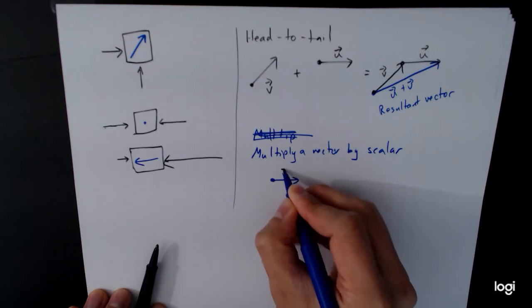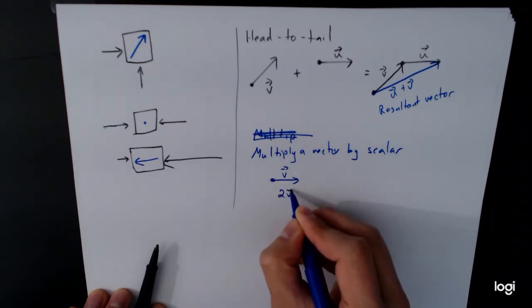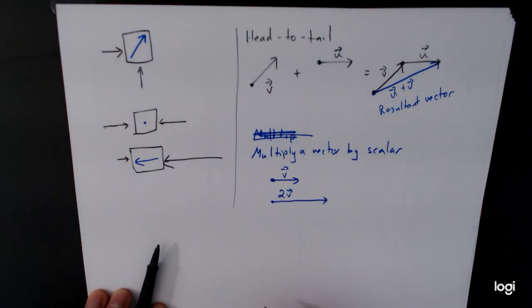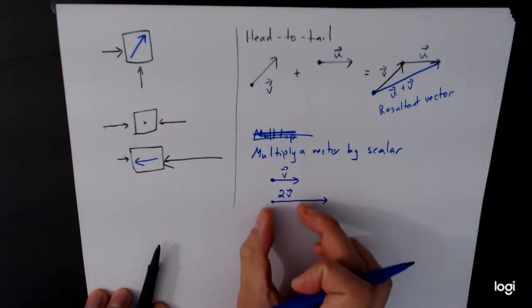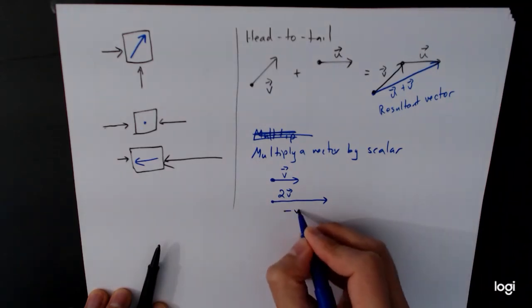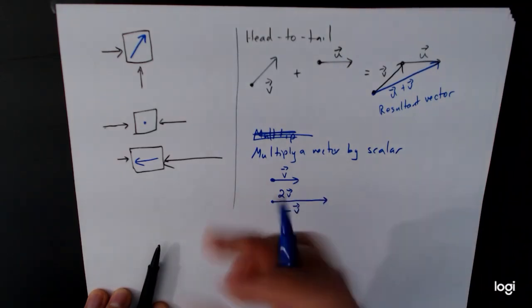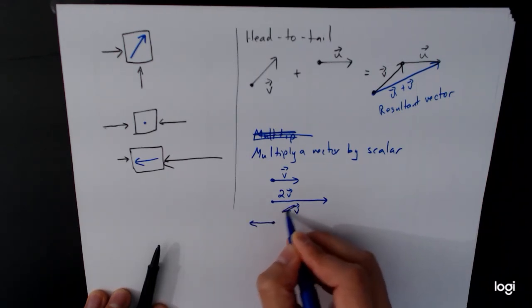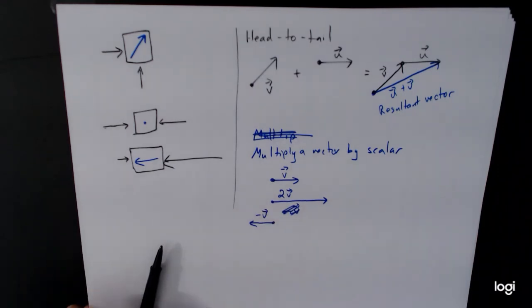So if we have the vector v here, then the vector two times v would be twice as long, but in the same direction. So we've scaled this vector out by a factor of two. If we use a negative number, if we have negative v, that takes the vector and flips it around so that it points in the other direction. And so this is the idea.